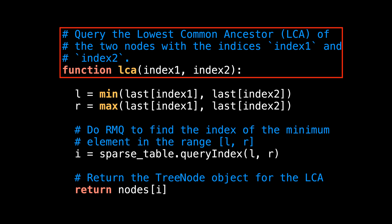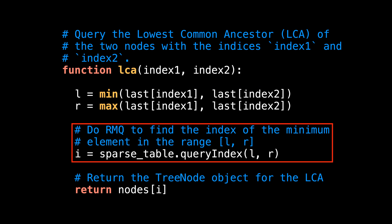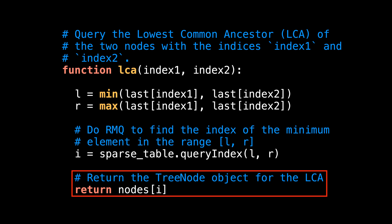and now the moment you've been waiting for, the lowest common ancestor method. The lowest common ancestor method takes as input two indices, index one and index two, for the nodes we want to find the LCA for. The first thing we want to do is look inside our last map. This finds the indices in the Eulerian tour associated with the nodes index one and index two. From these values, we can extract a left and right endpoint. To make sure that the left endpoint always appears before the right endpoint, take the min and max of the two indices. After we know the left and the right endpoints, simply do a range minimum query to find the index of the minimum element in the range L to R inclusive. We do this using the sparse table we created in the setup method. And lastly, return the tree node object for the lowest common ancestor found in the nodes array.